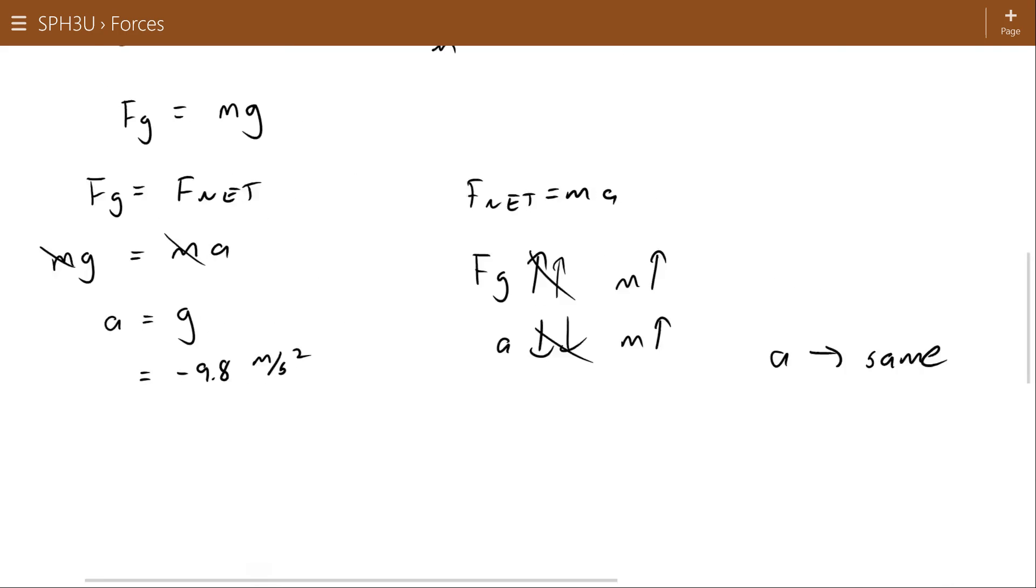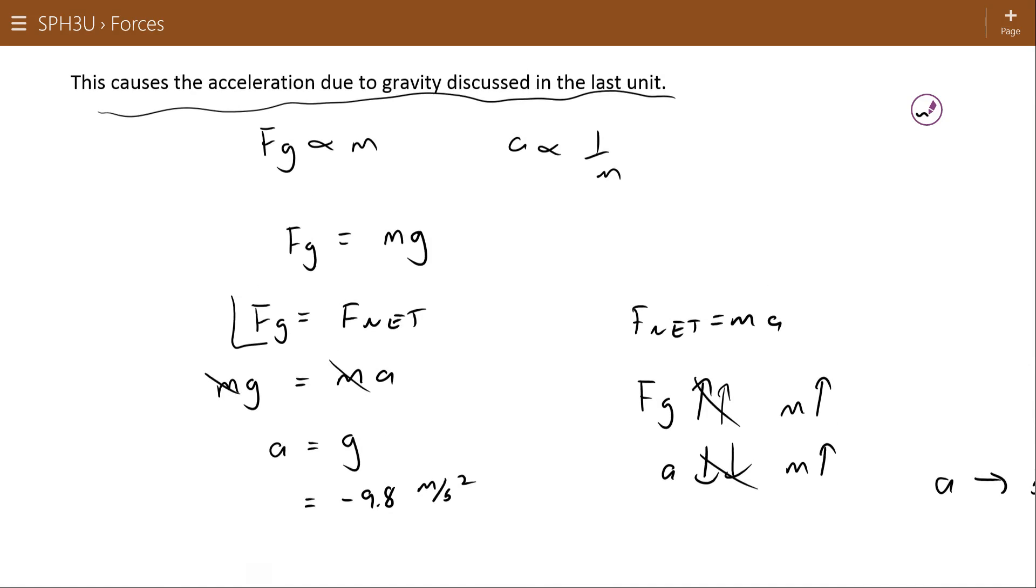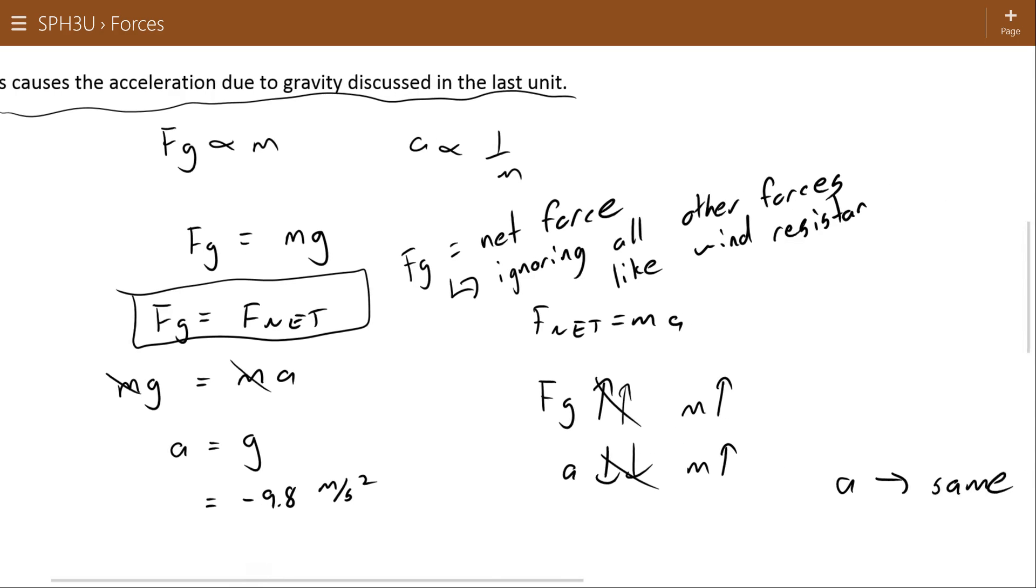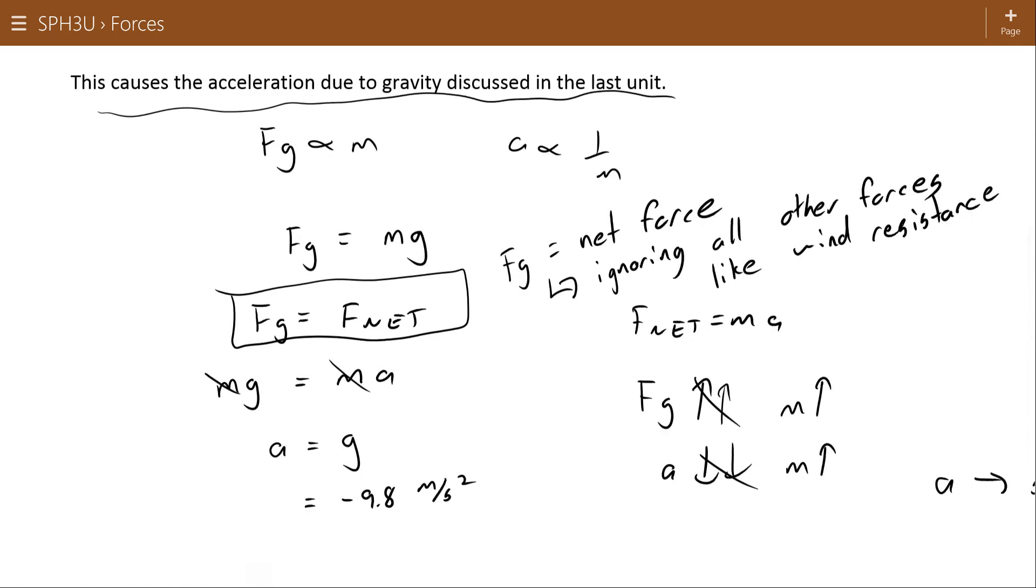Now a quick note here. We made an assumption right here. We said that the force of gravity is equal to the net force. And if you'll recall during all the stuff when we did acceleration due to gravity in the last unit, what this means is that we are ignoring all other forces like wind resistance. This is a pretty good assumption when it comes to objects that are moving fairly slowly or objects that are small and dense, but as you get big wide objects moving faster and faster and the wind resistance becomes more important, then the object isn't going to fall at negative 9.8 meters per second squared, but something less than that because the force of gravity will not really be equal to the net force. So that's just a little bit on force of gravity and acceleration due to gravity.